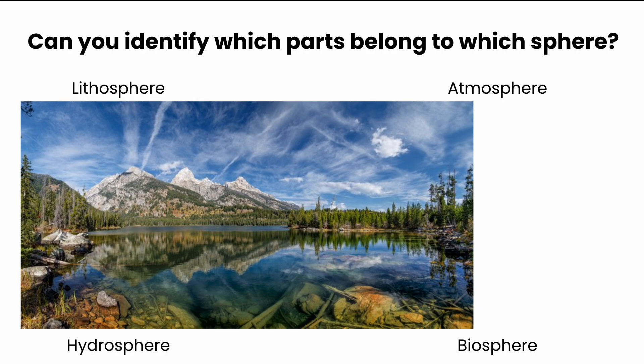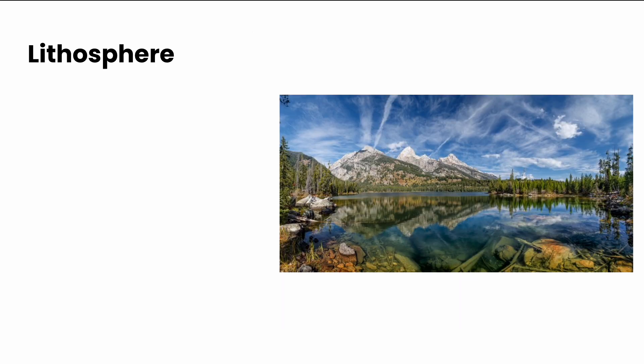Welcome back. Let's take a look at our picture here and go through our four spheres. Let's start with the lithosphere. The lithosphere is the Earth's outer shell. In this picture, it's all the rocks. You can see some rocks within the lake here, the mountains in the background, and the sand on the beach down on the far shore there. All of those parts are part of the lithosphere.